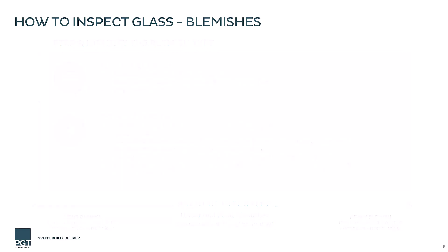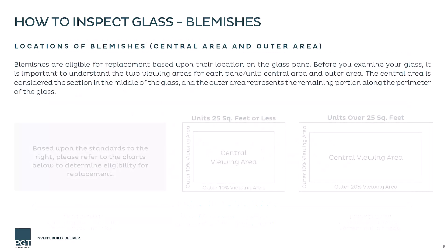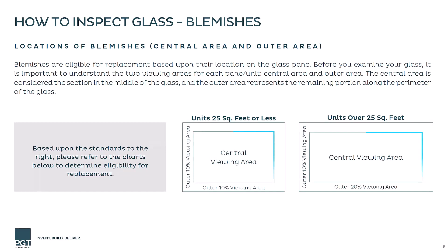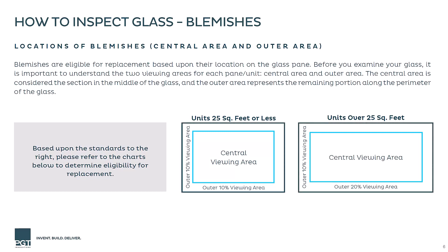Blemish location is also important in the glass inspection process. When viewing a window, the blemish location is identified as either falling within the central viewing area or in the outer viewing area. Different sizes of blemishes are allowed depending on if they're in the central or outer viewing area. To determine where your blemish may fall, it helps to refer back to the unit size we've previously determined.